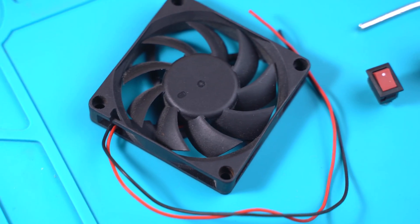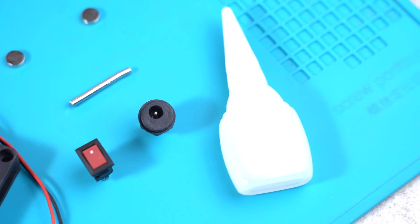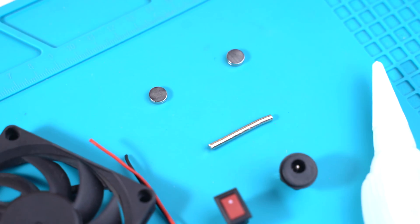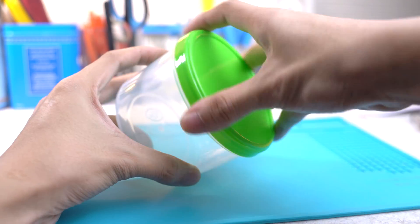Let's first start with the things that you will need. First you'll need a 12V cooling fan, a switch and a DC jack, super glue, and some neodymium magnets. You'll also need a plastic container in which your cooling fan would fit in.